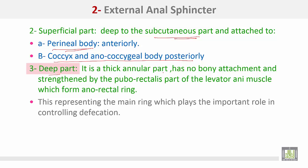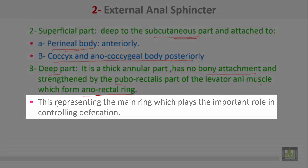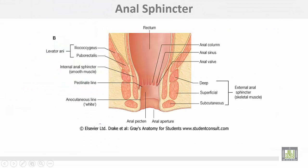The third part of the external anal sphincter is the deep part. It is a thick annular part with no bone attachment and is strengthened by the puborectalis part of the levator ani muscle, which forms the anorectal ring. This part represents the main ring which plays the important role in controlling defecation. The external sphincter is formed by three parts: subcutaneous part, superficial part, and deep part.